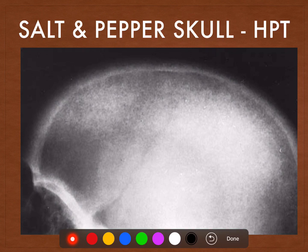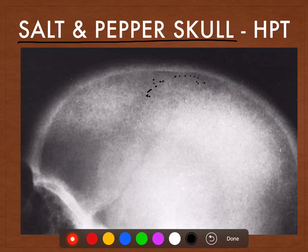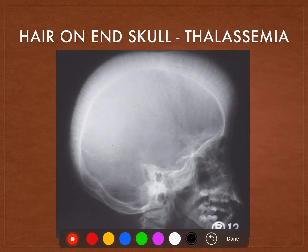Moving on, we see here multiple tiny radiolucencies in the skull and this skull is known as the salt and pepper skull. The pepper represents these tiny radiolucencies and the salt is the rest of the white normal skull. This salt and pepper skull is characteristic of hyperparathyroidism.